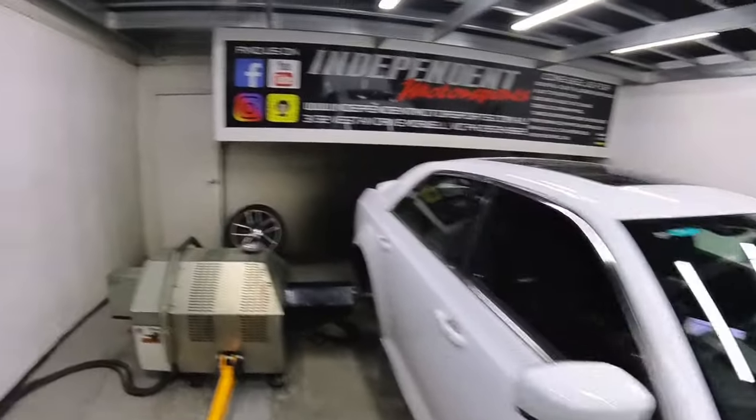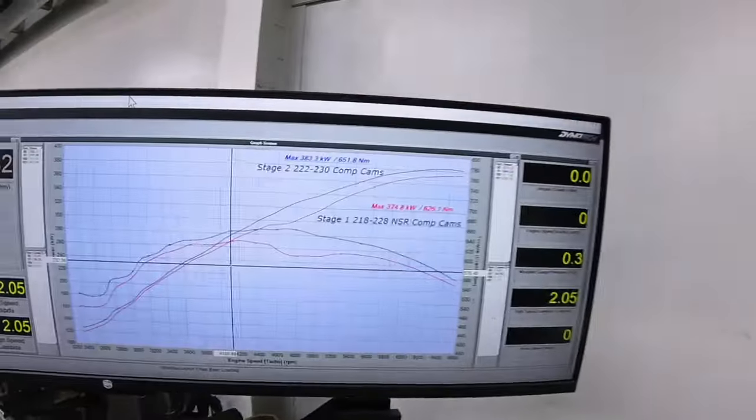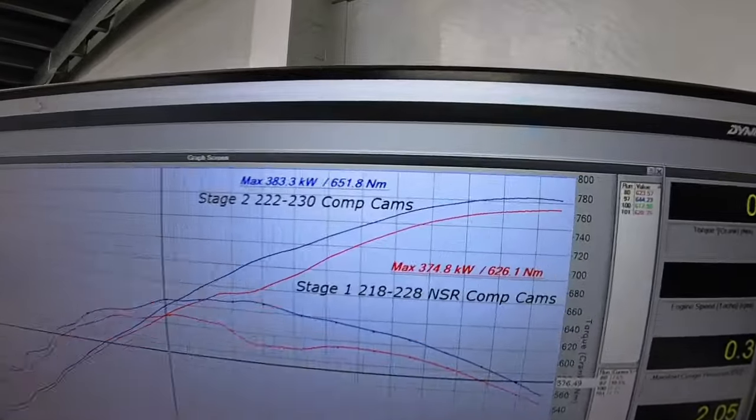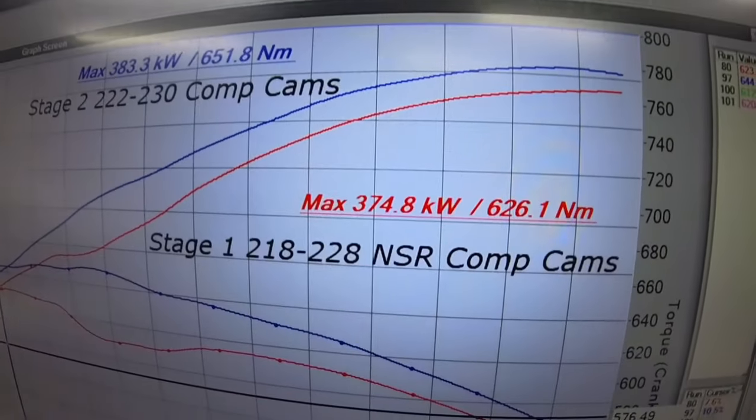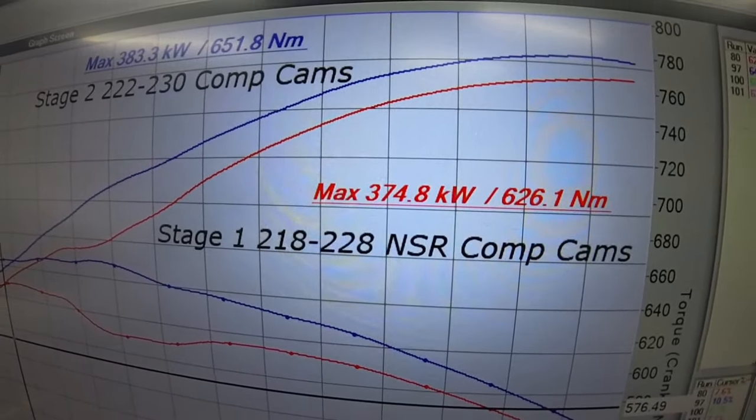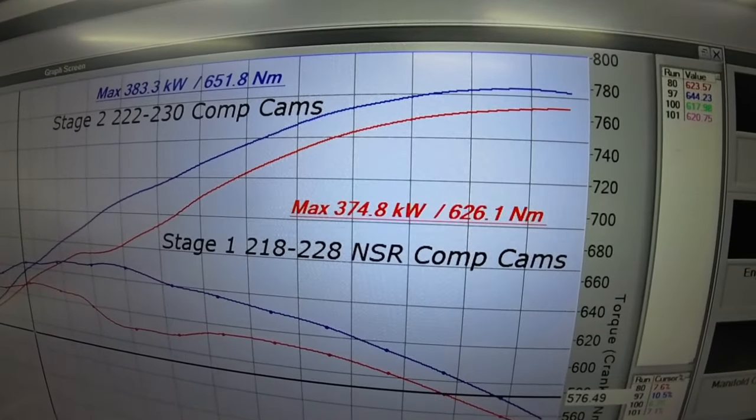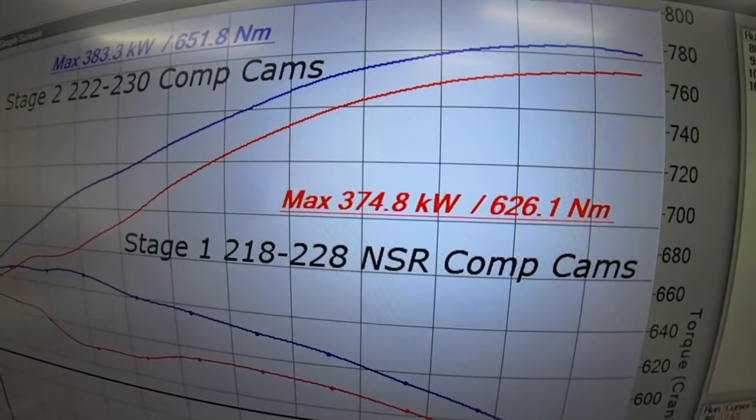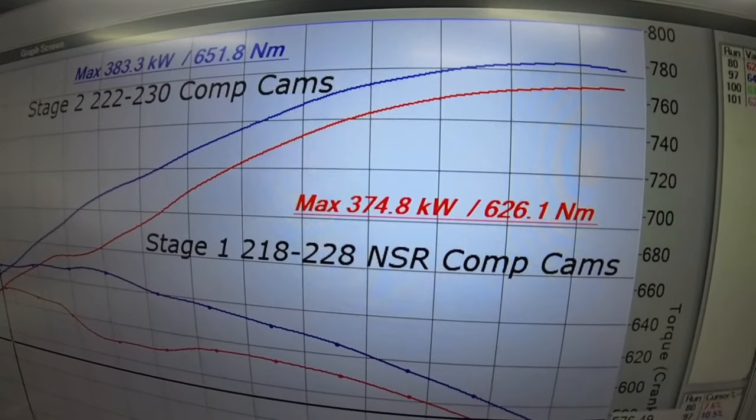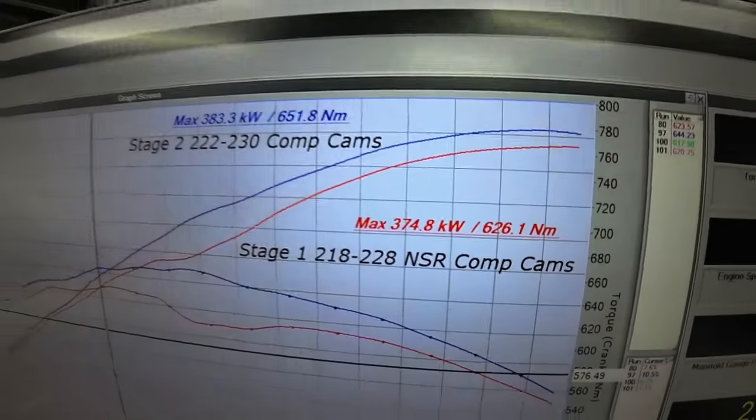We've now changed the camshaft out to the comp cams Stage 2. The previous cam was the Stage 1, 218-228 NSR comp cams, and that made 374 kilowatts and 626 newton metres, which is pretty healthy.